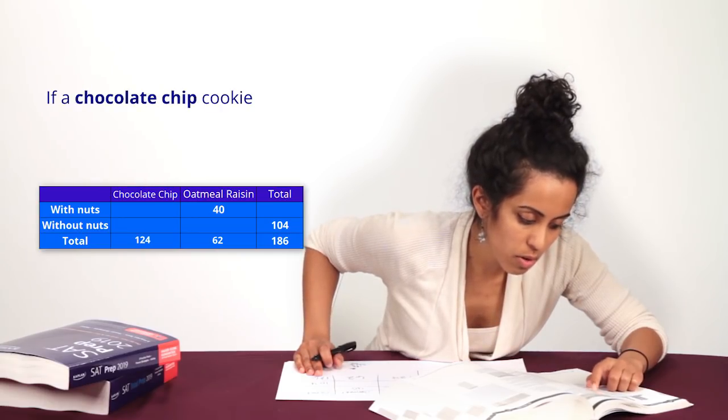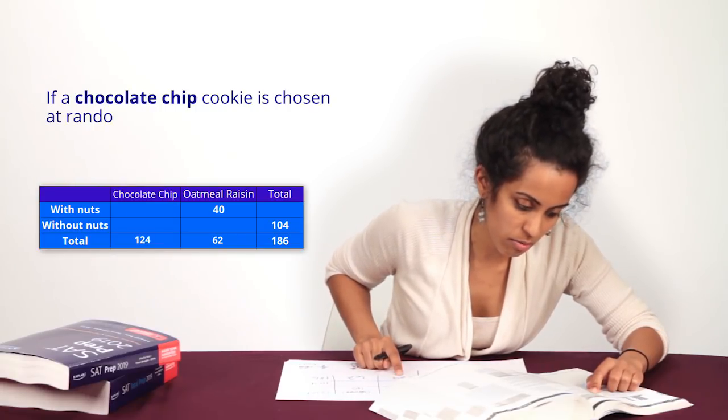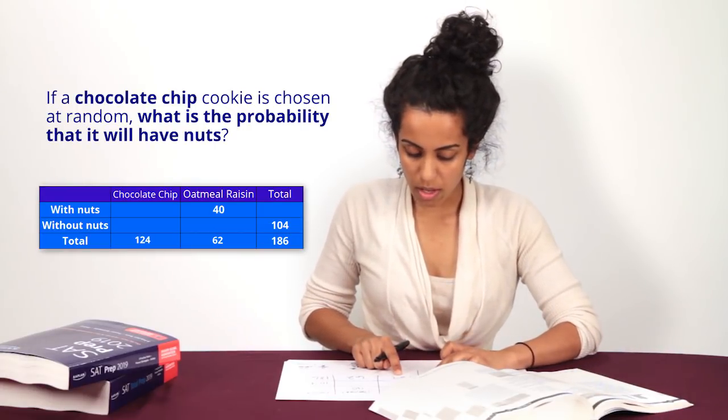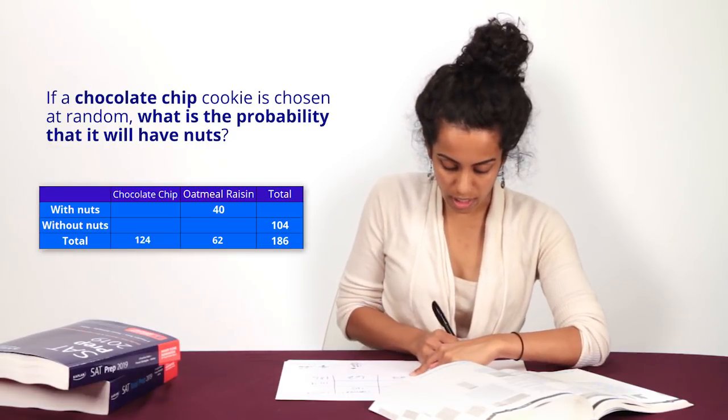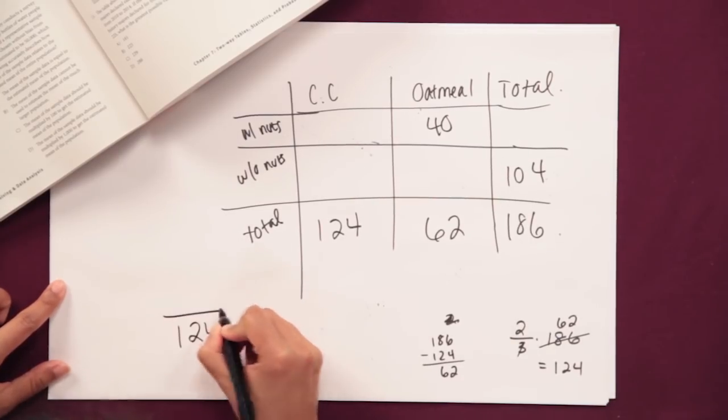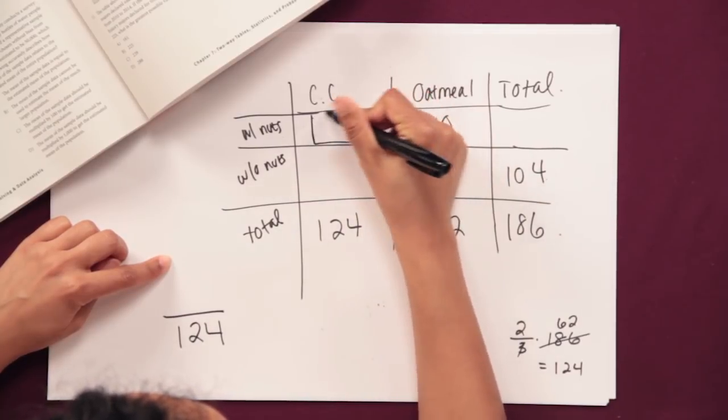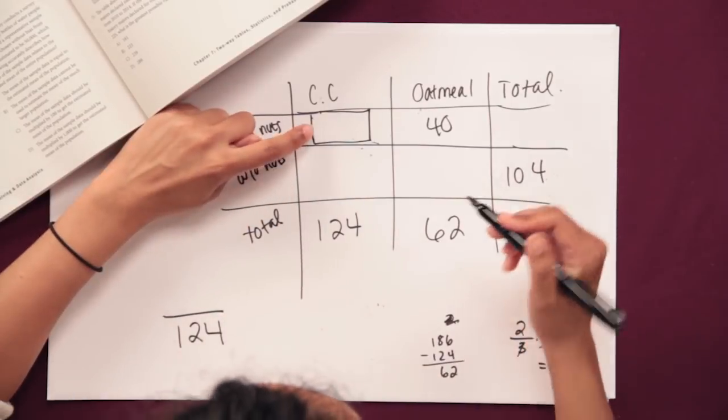All right, next line. If a chocolate chip cookie is chosen at random, what is the probability that it'll have nuts? So they want to say if there are 124 total cookies, they want to know, what's the probability it'll have nuts? So I want to go ahead and find out this number and put it in my numerator, and then we can divide that out later. So that's my goal right now.